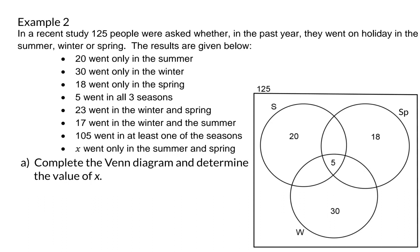So here we want the number of people who went on holiday in the summer, winter and spring. And that was already given as five people and indicated in the Venn diagram.